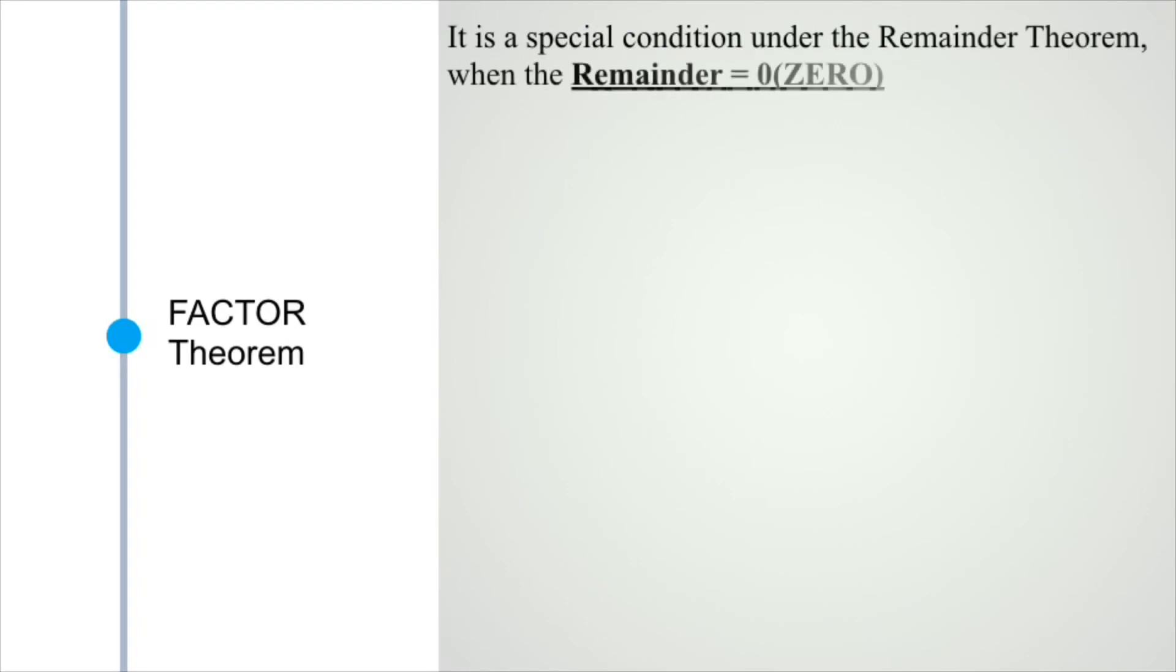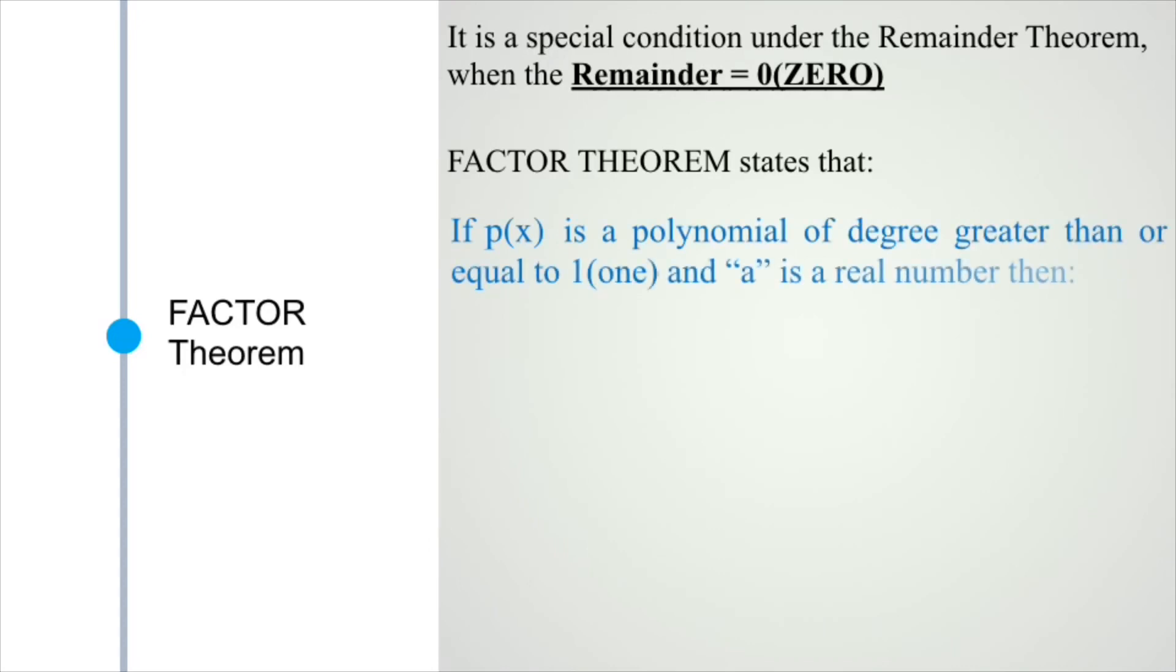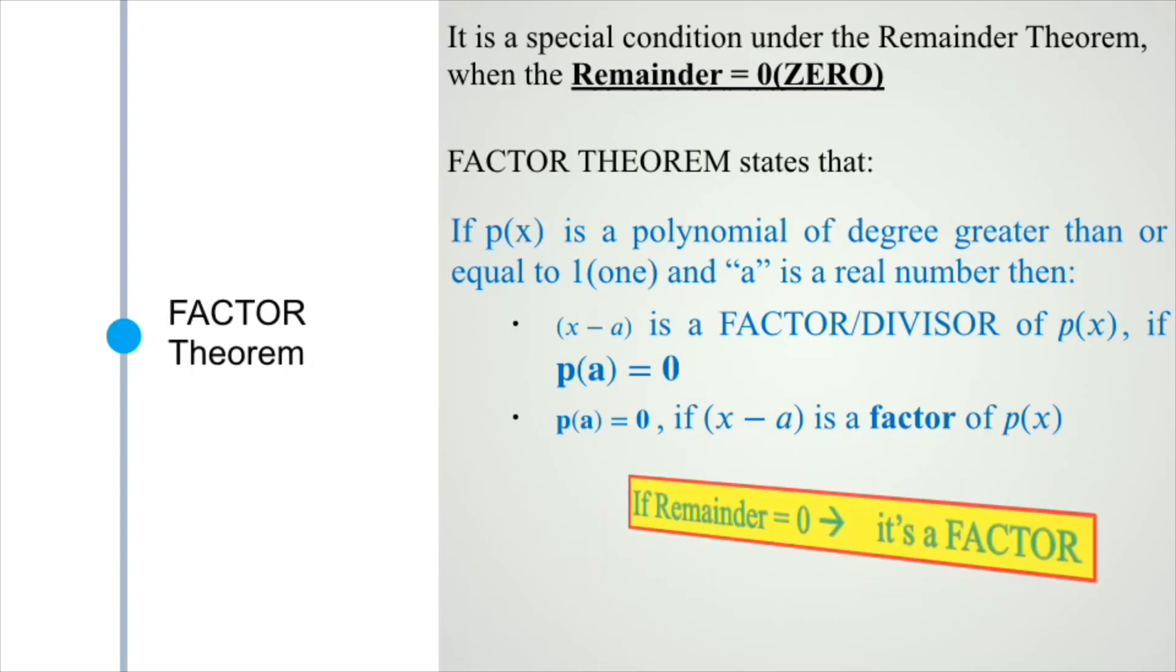While finding the remainder, if the answer is zero then we can apply the factor theorem. When it is a factor, that means the remainder has to be zero. When remainder is zero in any division, it is an exact factor.